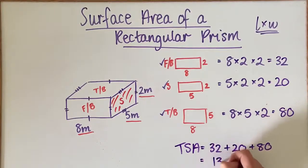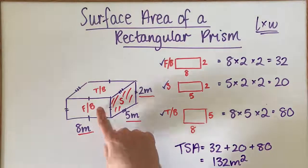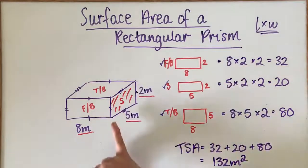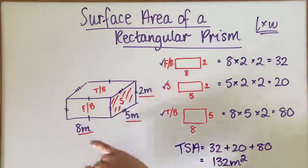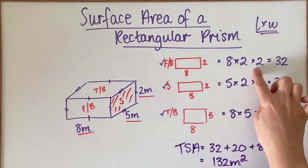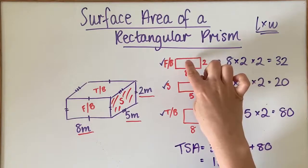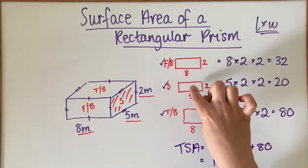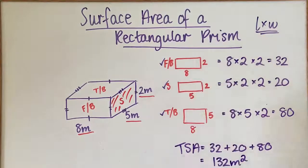So the first thing we did was find the area of the front and the back, find the area of the sides, find the area of the top and the bottom. Make sure that we account for the fact that we have two pieces this side, two pieces this size, and two pieces this size, that's why we've doubled them, and then we've added them all together to get our total surface area.